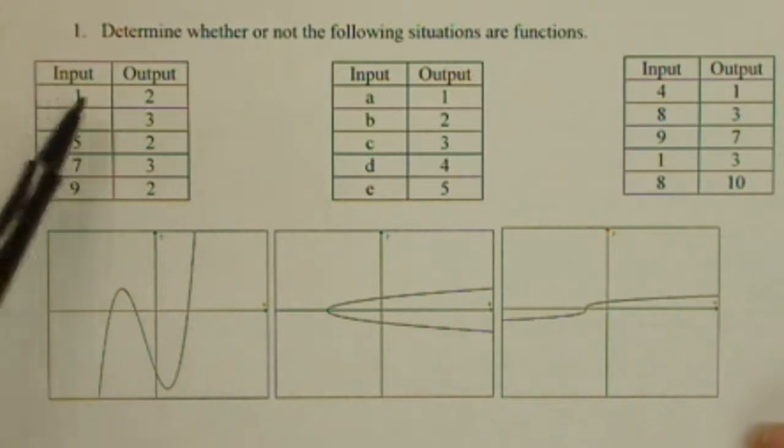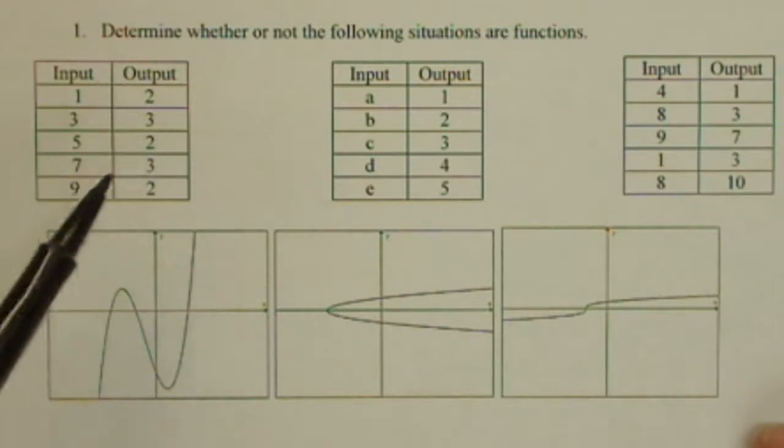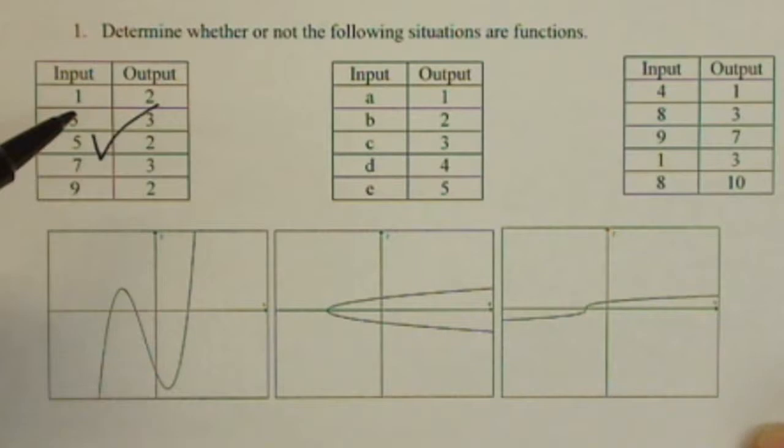So, in looking at our situation number one here, if the input's one it goes to two, three to three, five to two, seven to three, nine to two, that's going to be yes, that is a function.